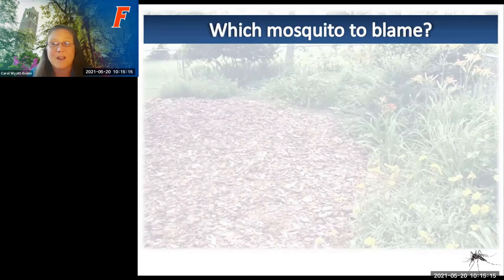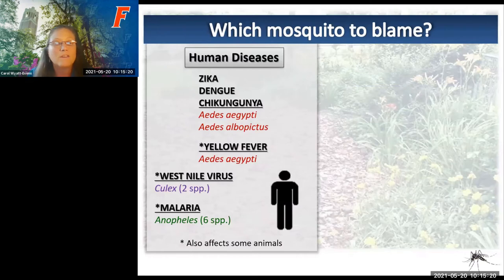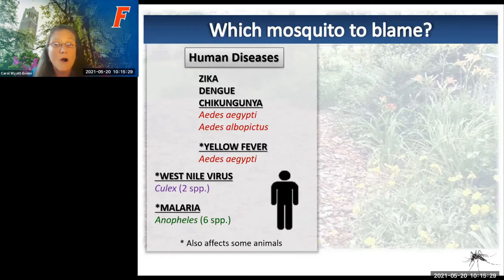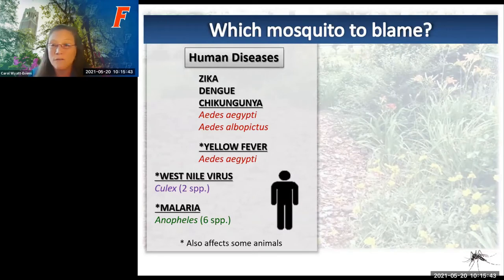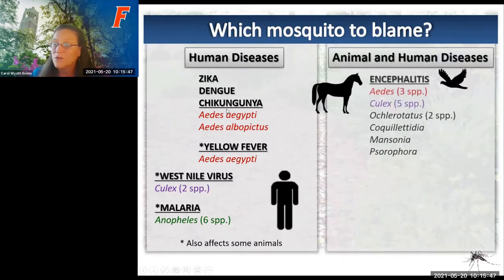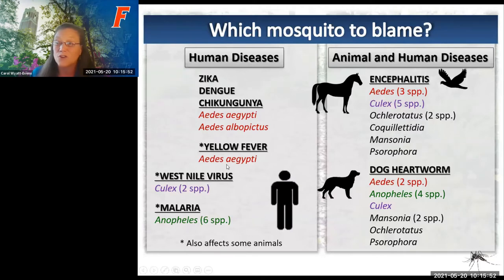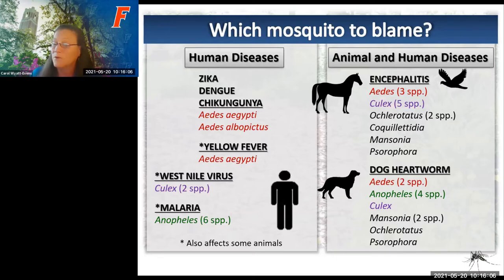Mosquitoes can vector different types of transmissions—parasites, bacteria, or viruses. Many problematic mosquitoes are vectors for arboviruses, meaning viruses carried by an arthropod. Zika, dengue, chikungunya, and yellow fever are all vectored by the Aedes species. West Nile virus is vectored by the Culex species. Yellow fever infects humans and some small mammals, with a 30–70% mortality rate and no cure. Of survivors, 15% develop serious illness including organ failure, bleeding, and shock.